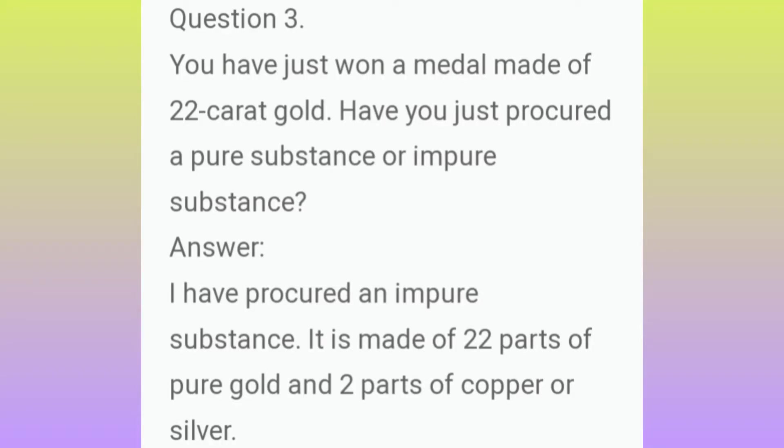Third question: You have just won a medal made of 22 carat gold. Have you produced a pure substance or impure substance? Answer: I have produced an impure substance. It is made of 22 parts of pure gold and 2 parts of copper or silver.